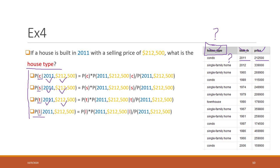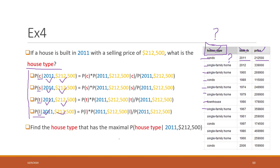We also calculate the probability for land or lot on the condition that the house is built in this year and at this price. We do this calculation for each single record, calculating the probability for all four types of houses. Finally, the prediction is whichever type has the maximum probability.